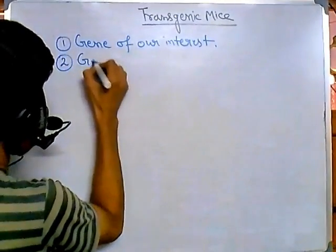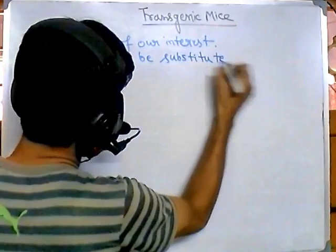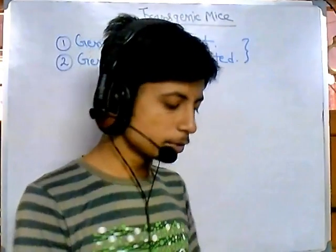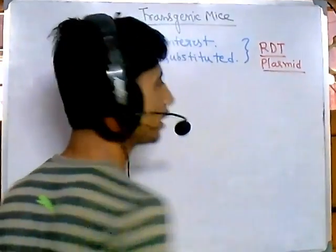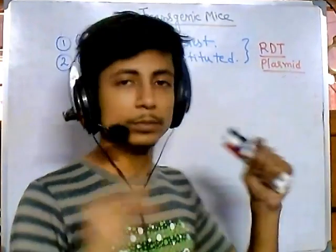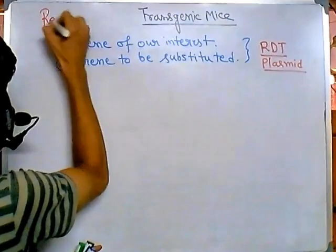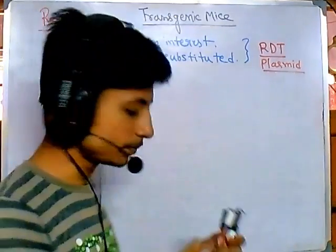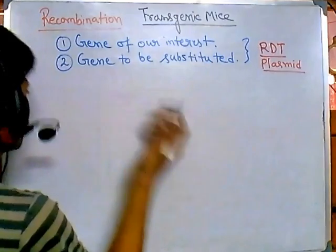The second important thing is the gene to be substituted. There should be a very important relationship between these two genes, because if you want to substitute a gene with our desired gene, either we need to take the help of a process called recombinant DNA technology using a plasmid and vector process. However, in this case we generally do not use that process. We use the natural way of recombination for substitution of a particular gene with our desired gene inside the mouse.